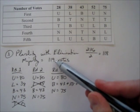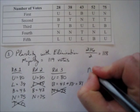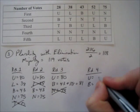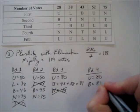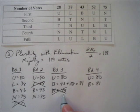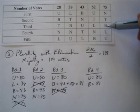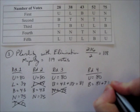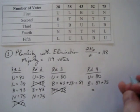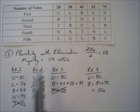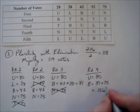We eliminate the lowest vote-getter again — this time Nelly is out. In round four we're left with Usher at 80 and Blue at 81. Nelly's 75 votes can't go to Train, already eliminated, so they must go to Blue Cantrell: 81 plus 75 equals 156, which exceeds 119. Therefore Blue Cantrell wins the election by plurality with elimination.